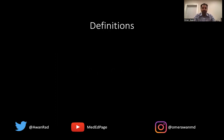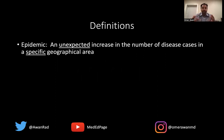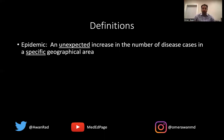Let's talk a little bit about definitions. An epidemic is an unexpected increase in the number of disease cases in a specific geographic area. There are two key principles: it's an unexpected increase — cases are on the rise and we don't expect them to increase — and it's limited to a specific geographic area, not spreading to multiple countries throughout the world. A nice example is the measles epidemic that occurred in the United States in the early 1900s. Those are epidemics.